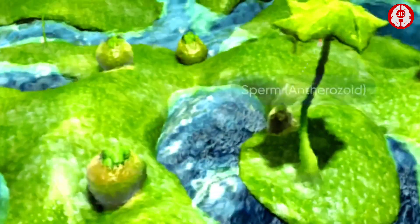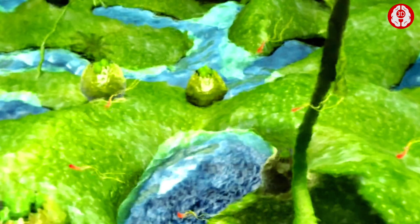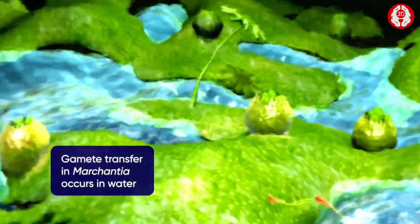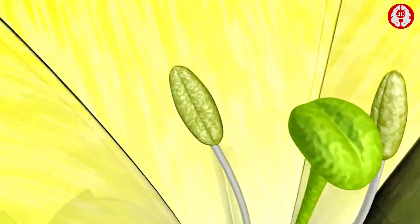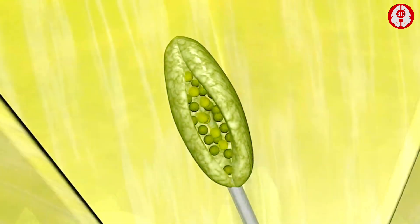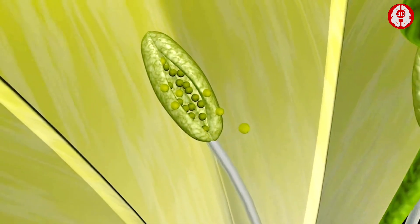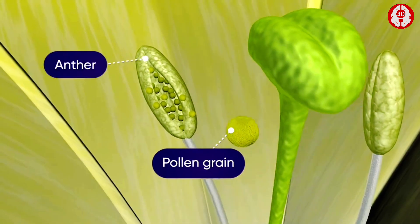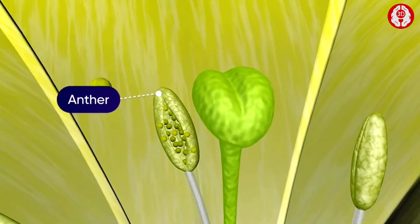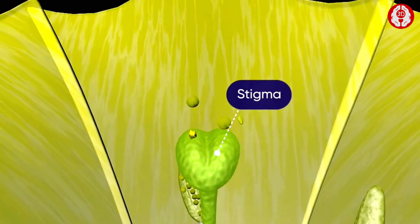The male gametophyte produces the sperms or antherozoids, which travel to the female gametophyte through the medium of water. Similarly, in other plants, pollen grains formed in the anther are transferred to the stigma of the carpel in a process called pollination.